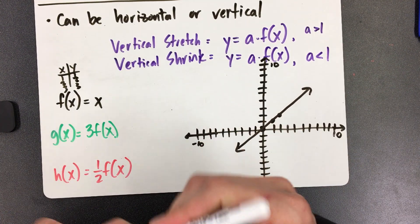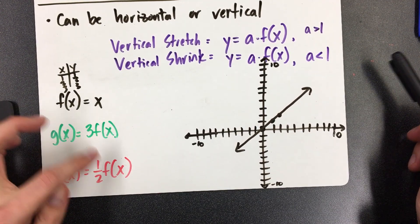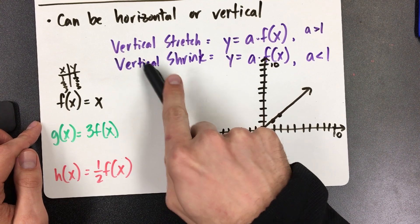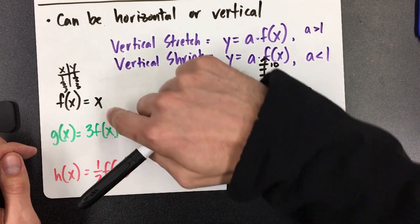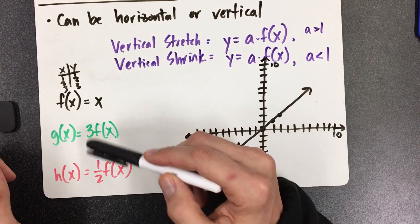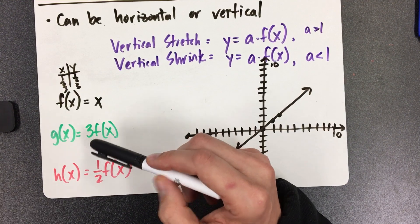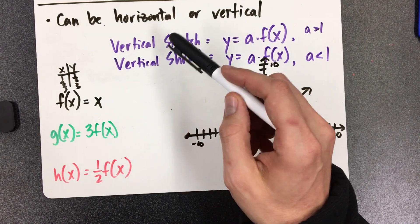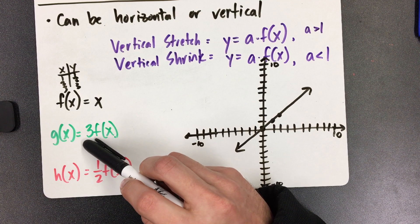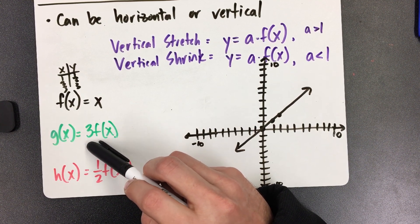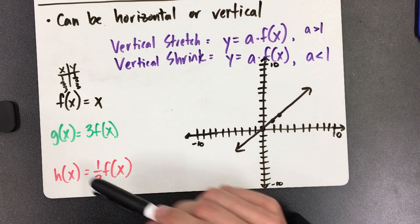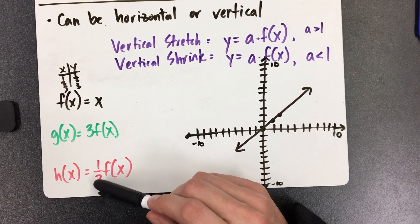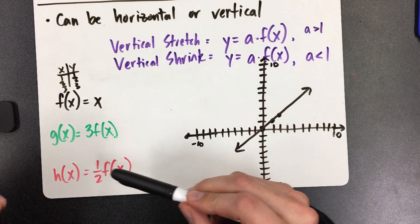Now here are the ones that are stretches and shrinks. See how you've got a number out in front of the letter f? Here you have a 3, here you have a 1 half. That is your indicator. When the number is out in front of the parentheses, in front of the letter f, it's a clue that you have a vertical stretch or shrink. If the number is bigger than 1, the line will be three times as steep. If it's between 0 and 1, it will be a vertical shrink — flatter.